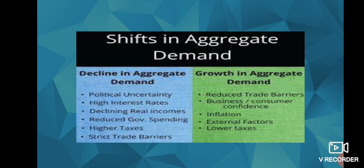The shifts in aggregate demand can be caused by decline or growth in aggregate demand. Decline in aggregate demand is caused by political uncertainty, high interest rates, declining real incomes, reduced government spending, higher taxes, and strict trade barriers. Growth in aggregate demand will be due to reduced trade barriers, reduced consumer confidence, inflation, external factors, and lower taxes.